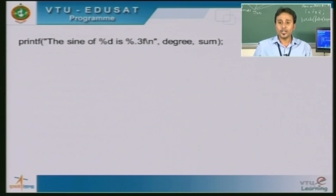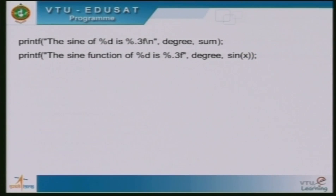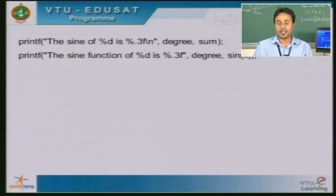Next we need to print the sin value calculated by our program. The format is: sin of %d is %.3f, using degree and sum. Finally, the sin function's calculated value — sin of x — is printed. Since the question asks us to compare the calculated value to that of the built-in sin function value, we print both results. Finally, we terminate the program using getch.